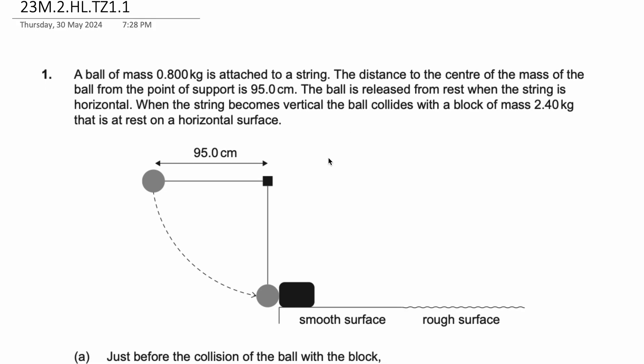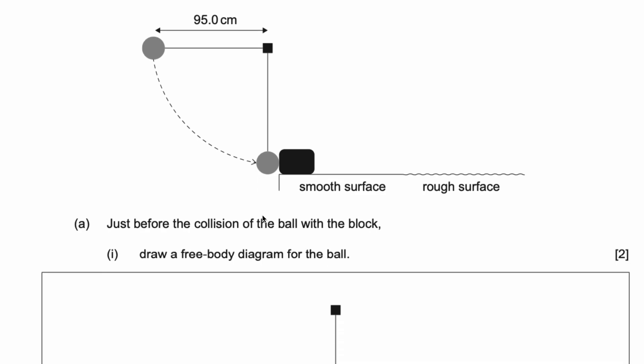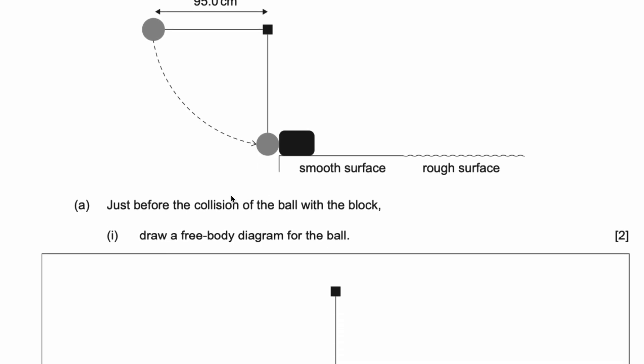Now here they have given us a diagram. So part A: just before the collision of the ball with the block, draw a free body diagram for the ball.